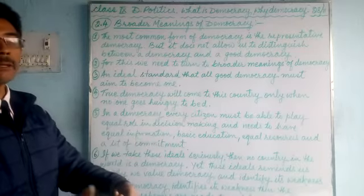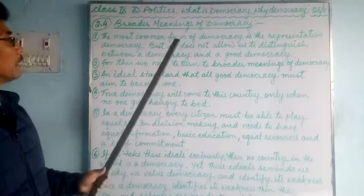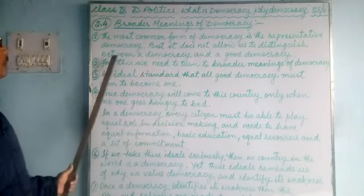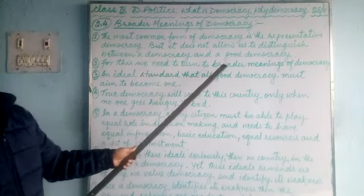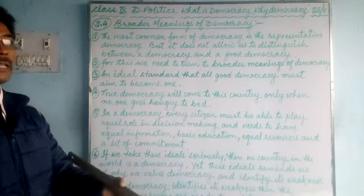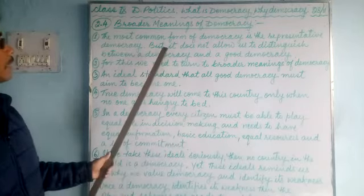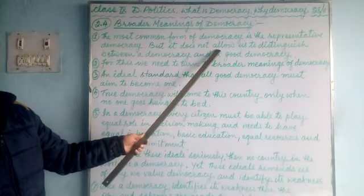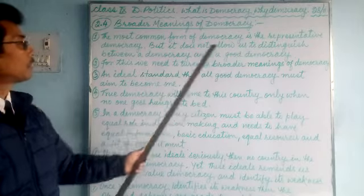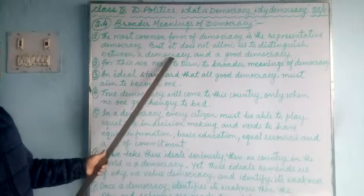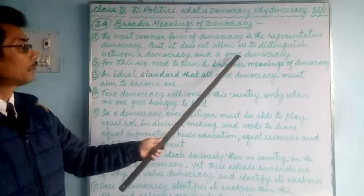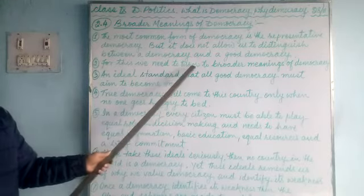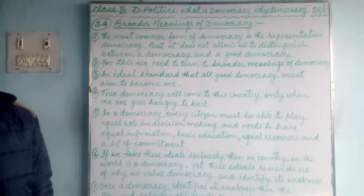We have learned about all the features and qualities of a democracy, but just looking at those features does not allow us to distinguish between a democracy and a good democracy. We have learned about democracy, but what is the meaning of a good democracy — that we don't know exactly so far. Whatever we have learned about democracy, its features and qualities, does not allow us to make a difference between a democracy and a good democracy. Today we will learn about a good democracy.